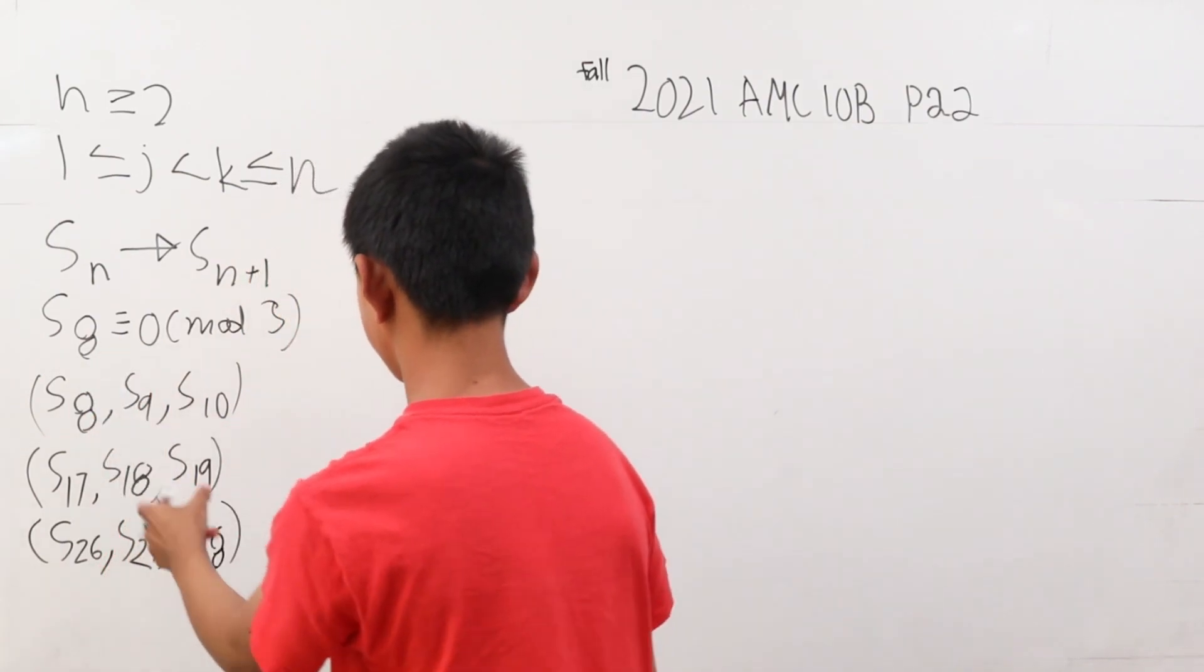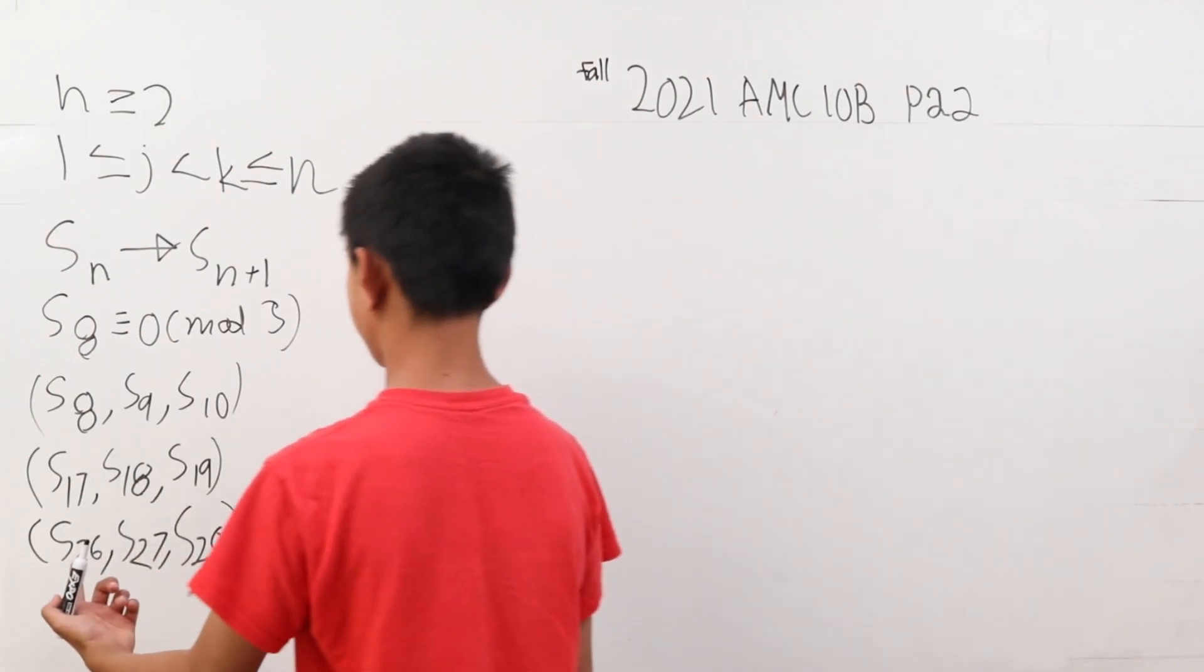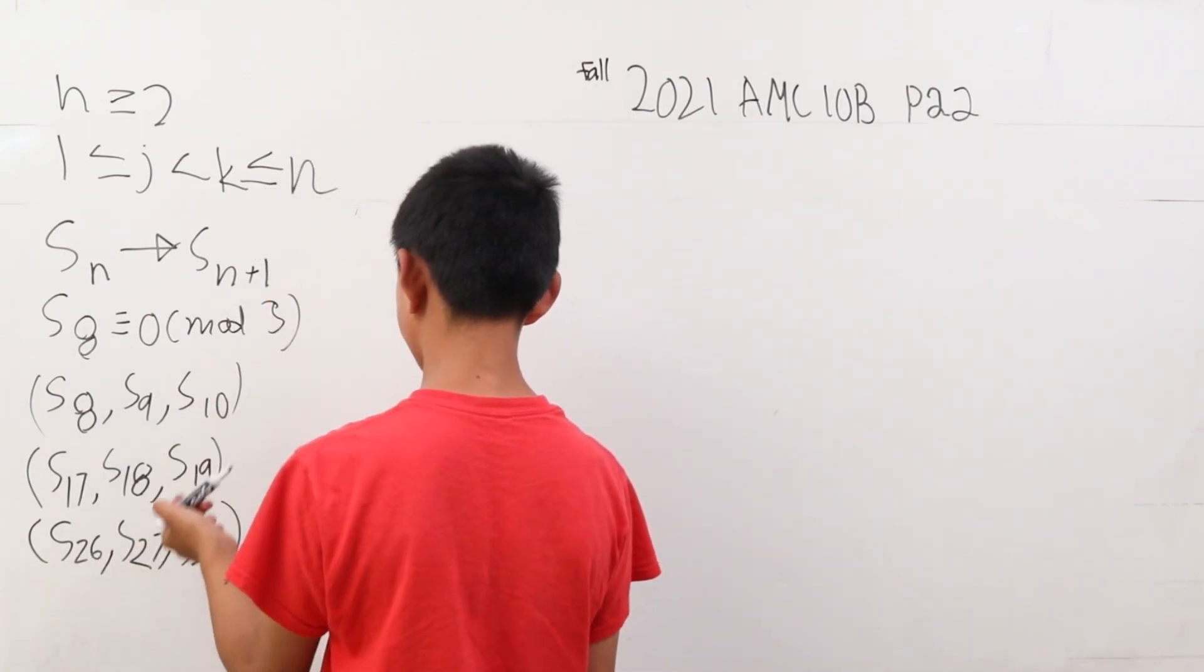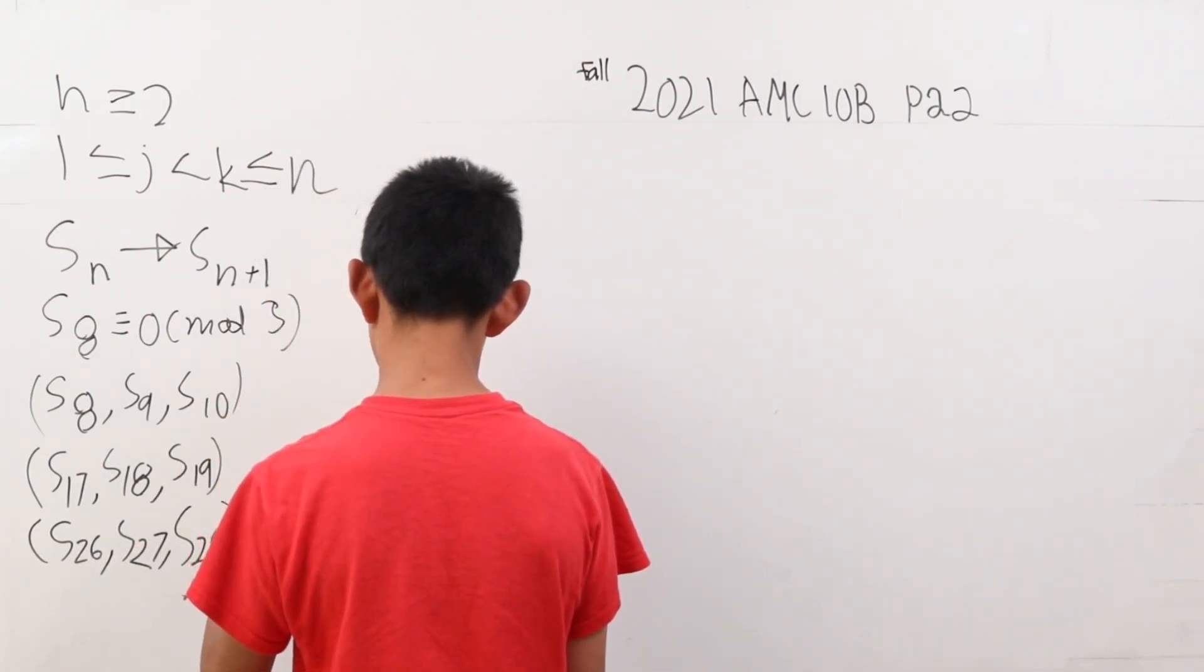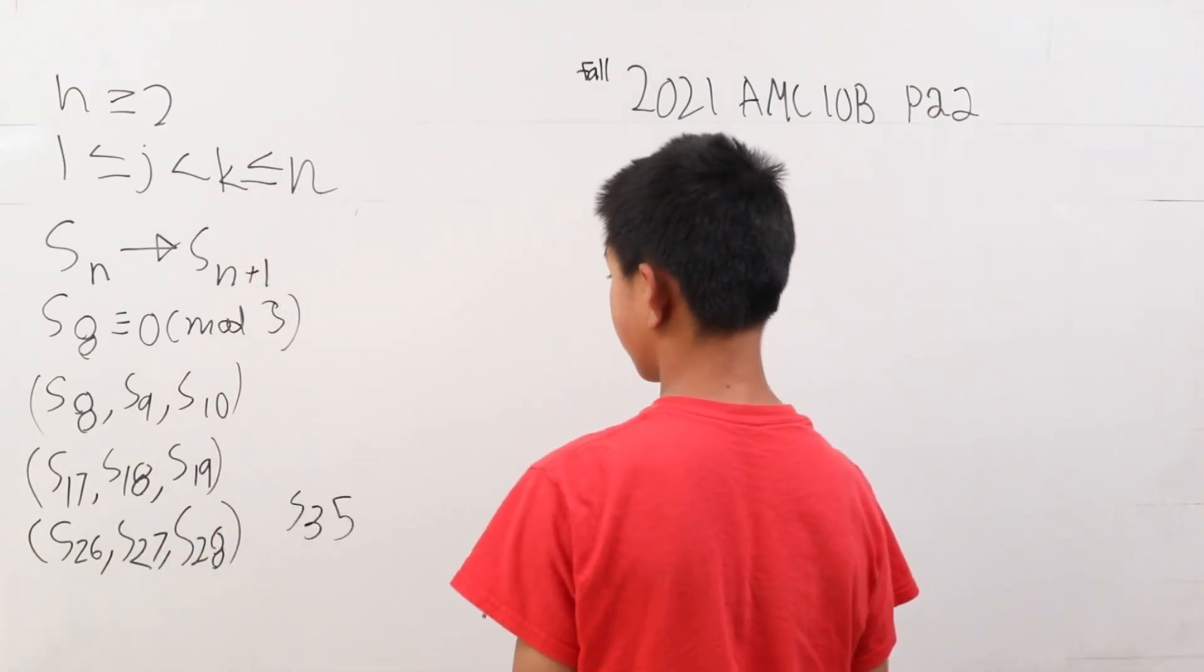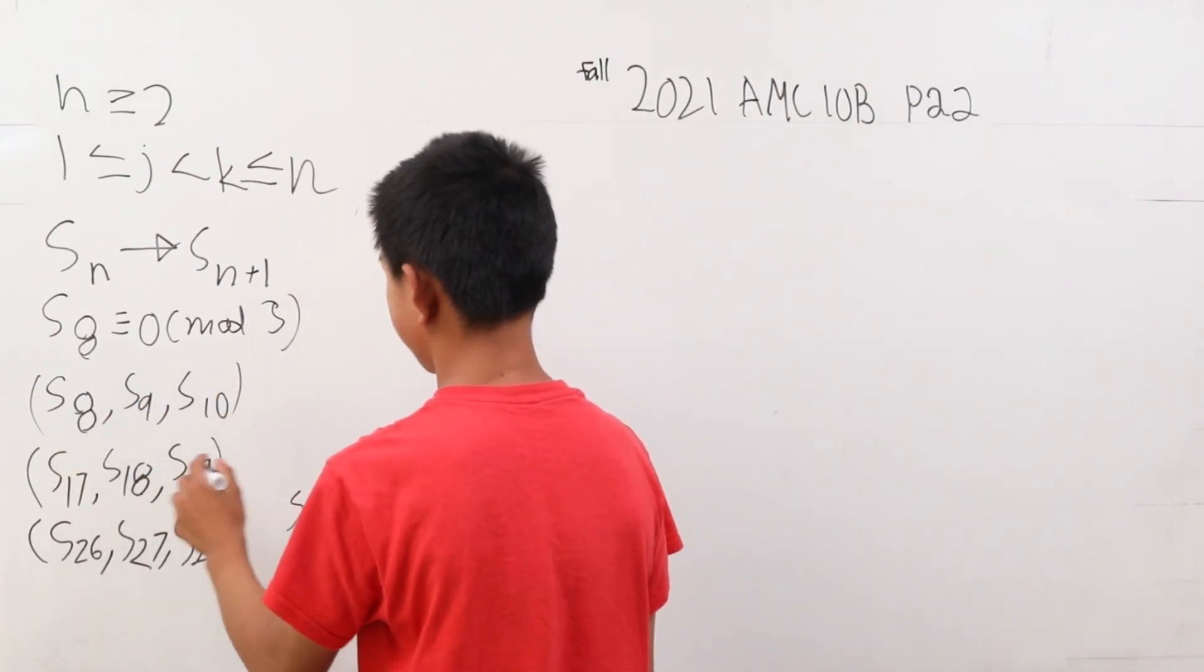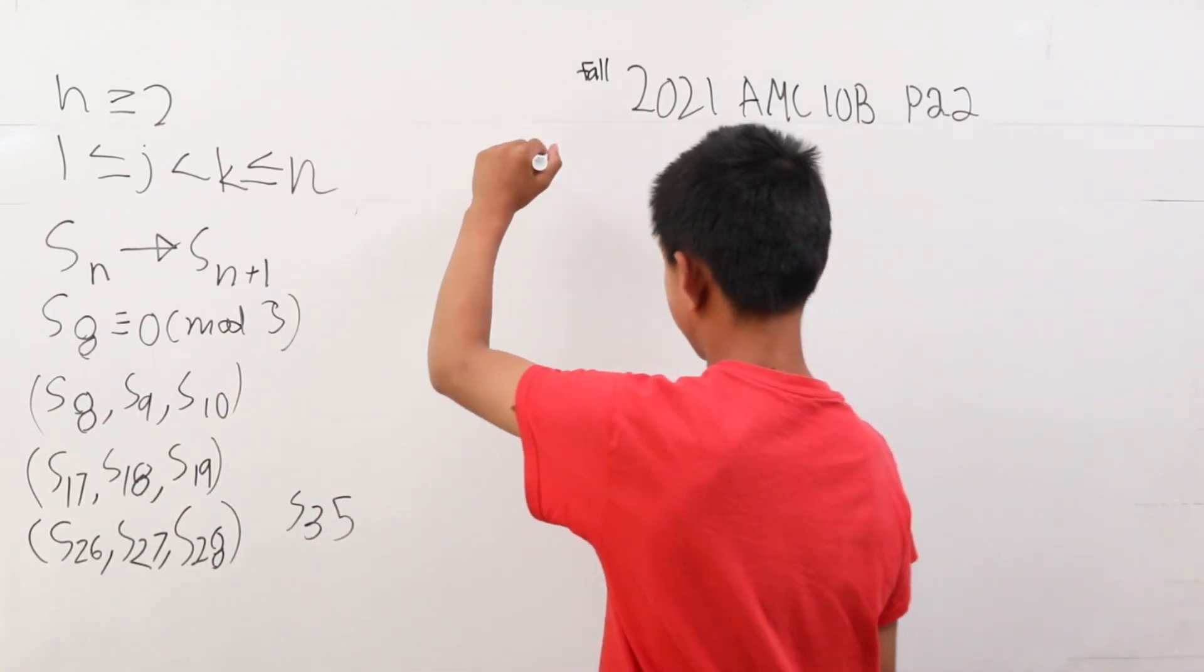We have 9 terms here. We want the 10th term. The next term after s of 26 is going to be s of 35. This is our 10 terms. We just want the n's here. The n's are all these bottom numbers, so we can add them up.